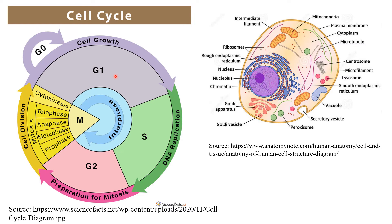The protein synthesis in G1 phase helps to divide the cells. Most of the cell organelles increase in number during this phase, so that when the cell divides, each daughter cell gets an exact copy.